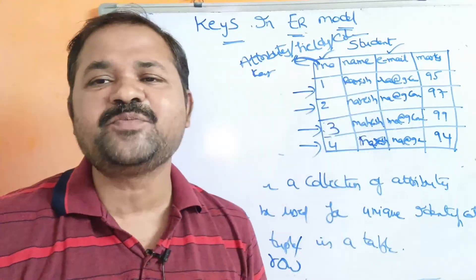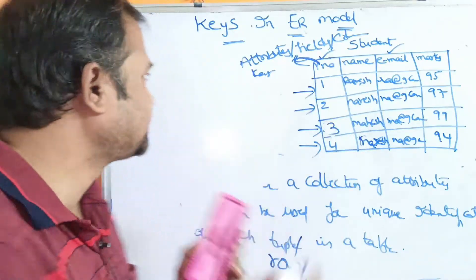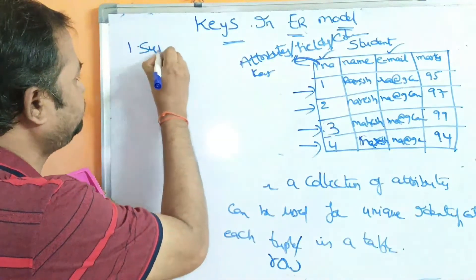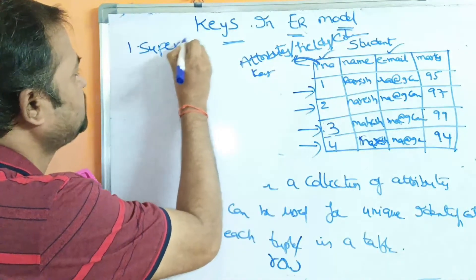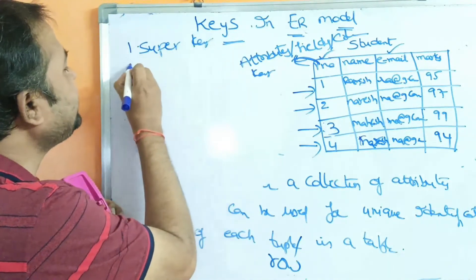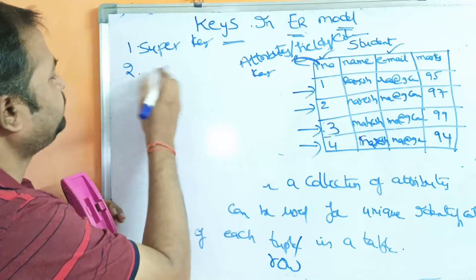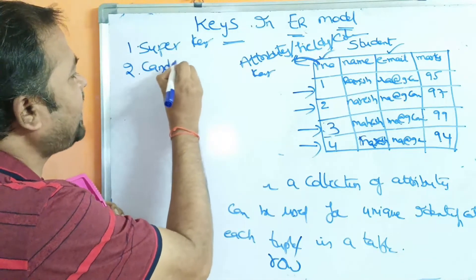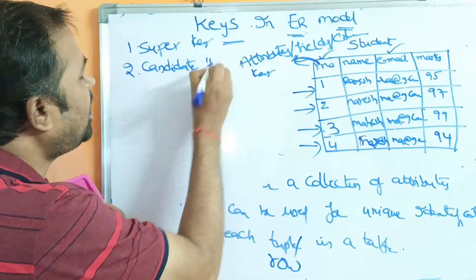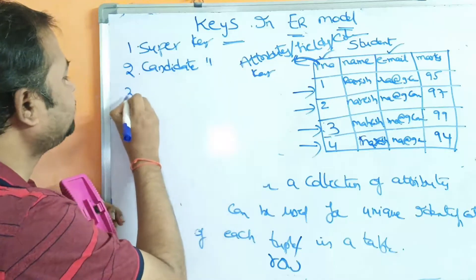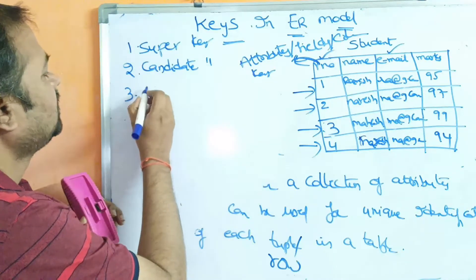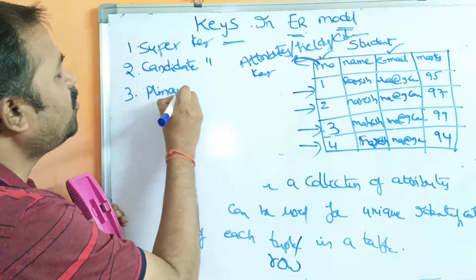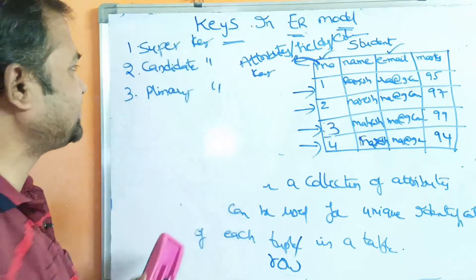In ER model, we mainly use three keys. The first key is super key. The second key is candidate key. The third key is primary key.